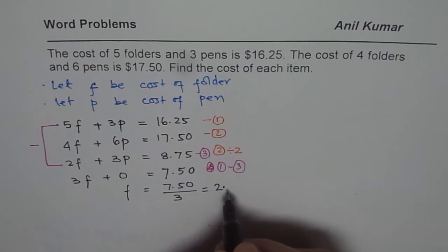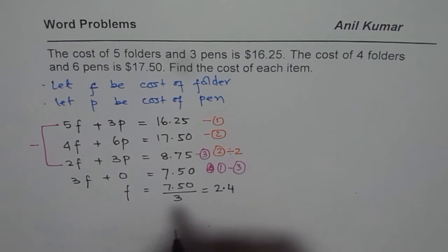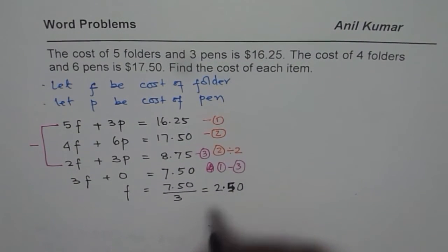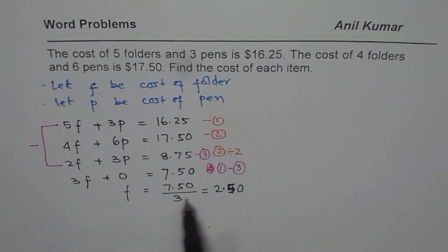So that means 3 times 4 is 12. And 30 means, I mean, I am sorry, 3 times 5 is 15. So what you get is 2.50. So that is how you get your result for F. So the cost for the folder is $2.50.